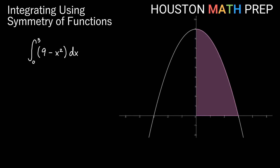Welcome back everyone. Houston Math Prep here to talk about integrating functions using symmetry of their graphs. Here I've got the integral of 9 minus x squared dx — a definite integral from x equals 0 to x equals 3. I've got a picture of a graph showing the area represented by this definite integral: my parabola and the area between the axis and the function from x equals 0 to x equals 3.